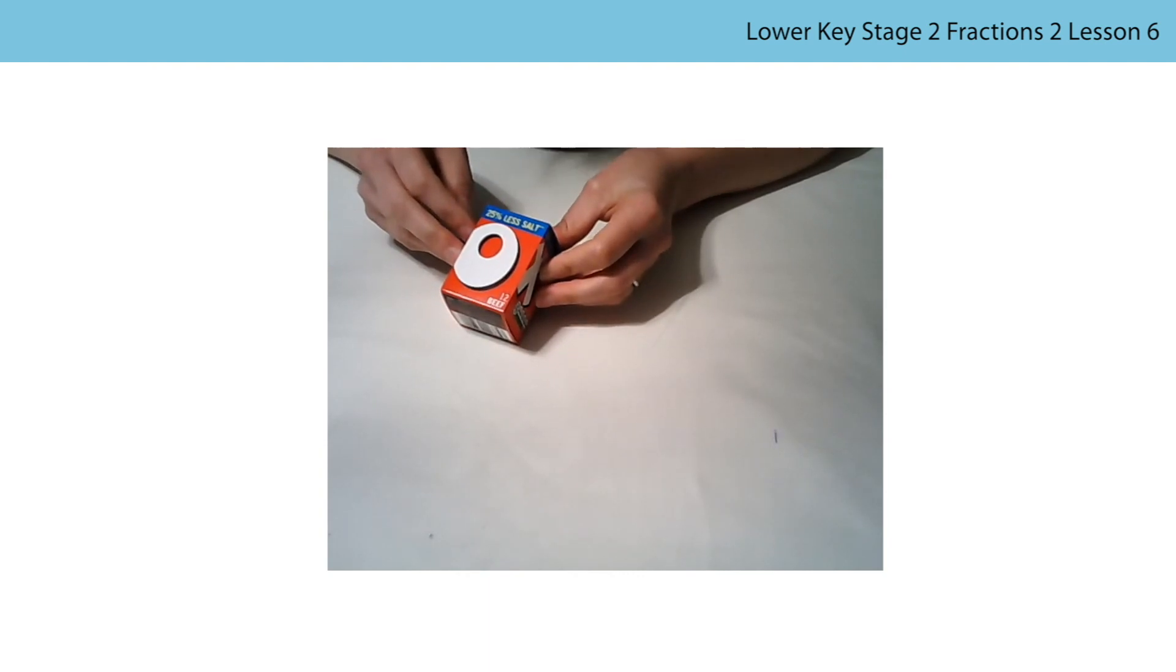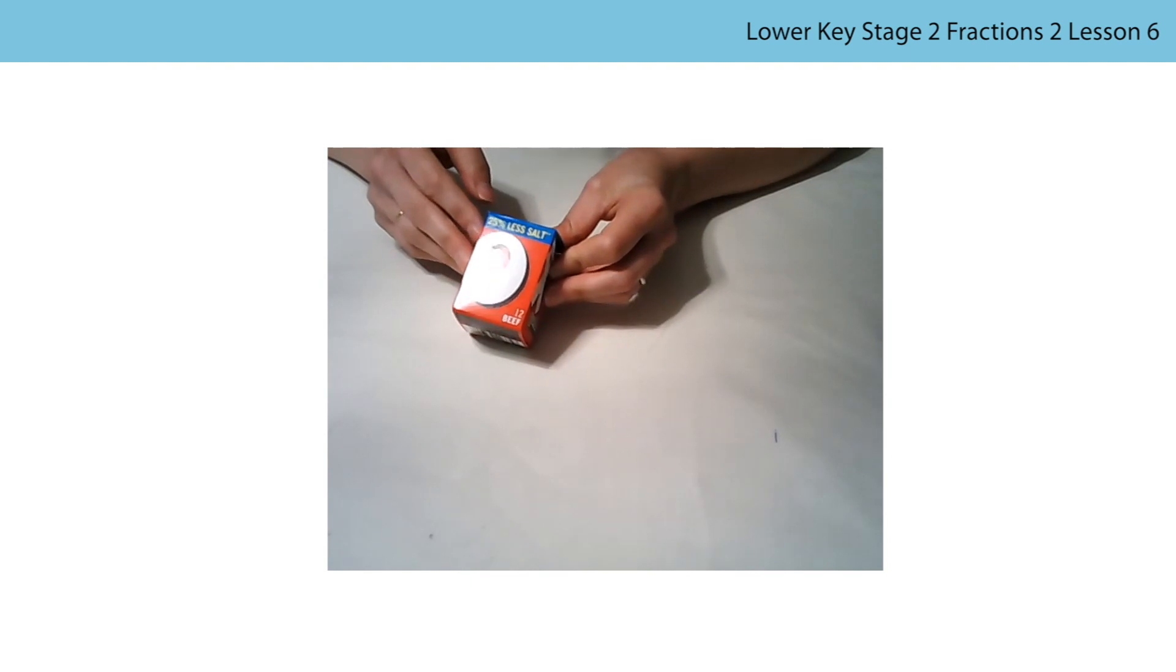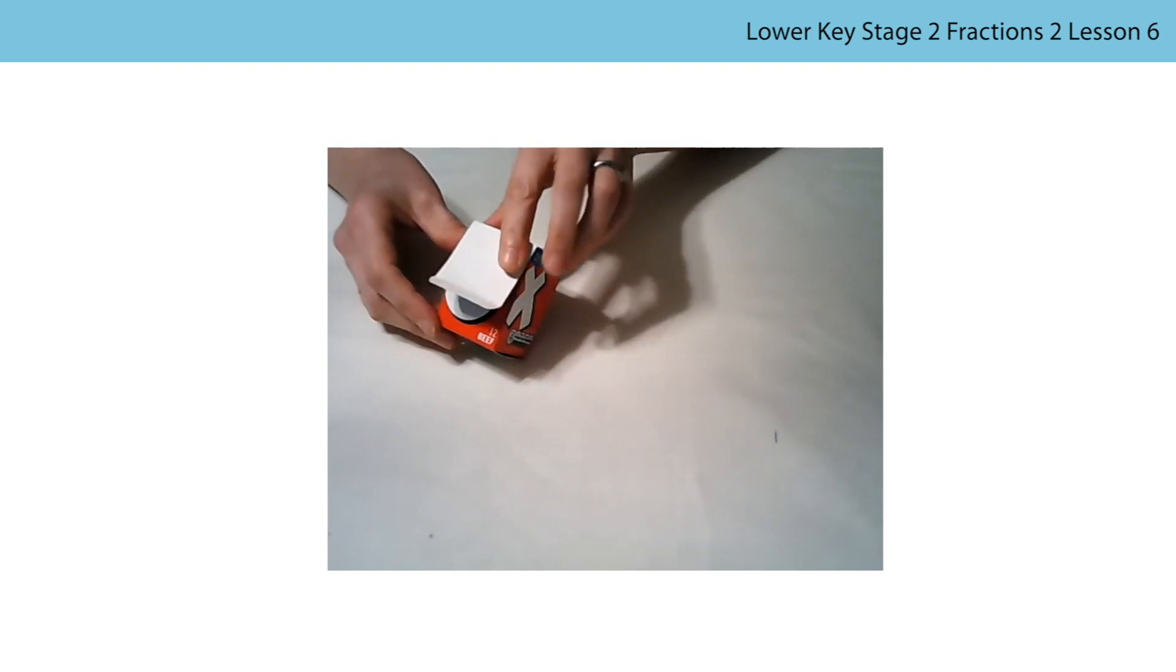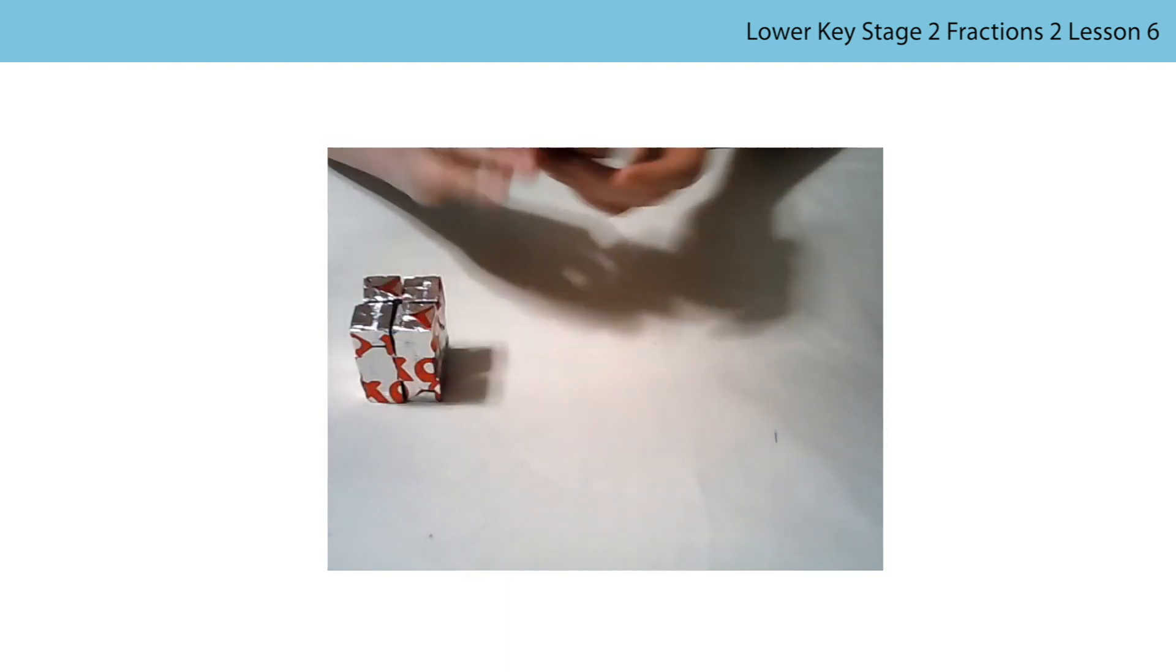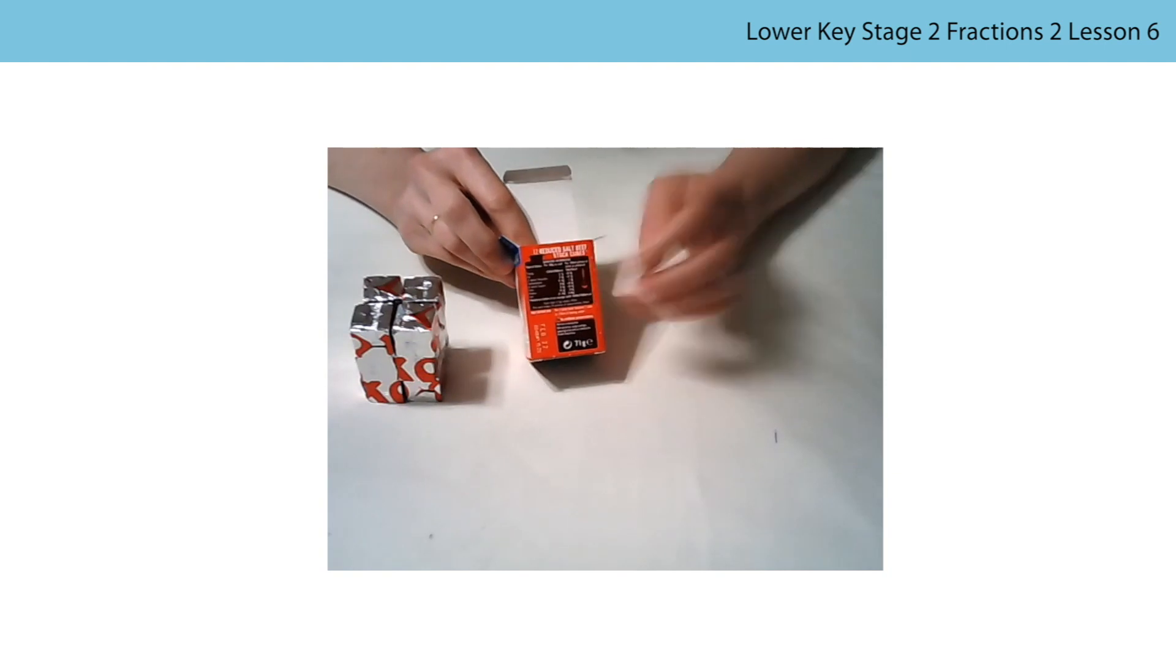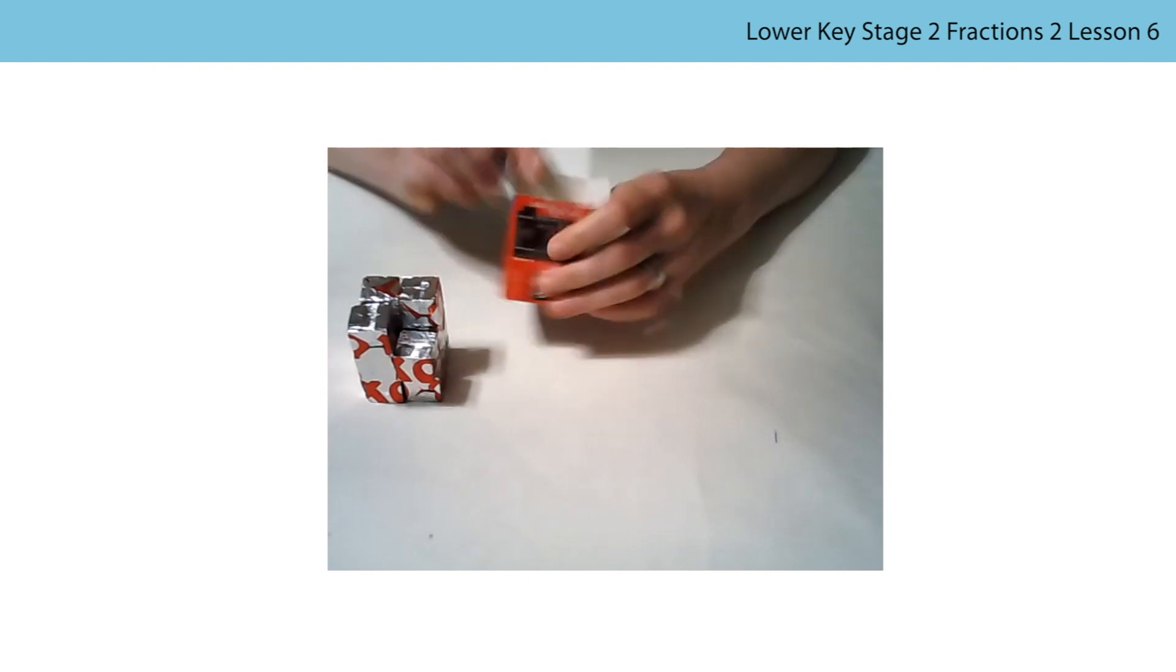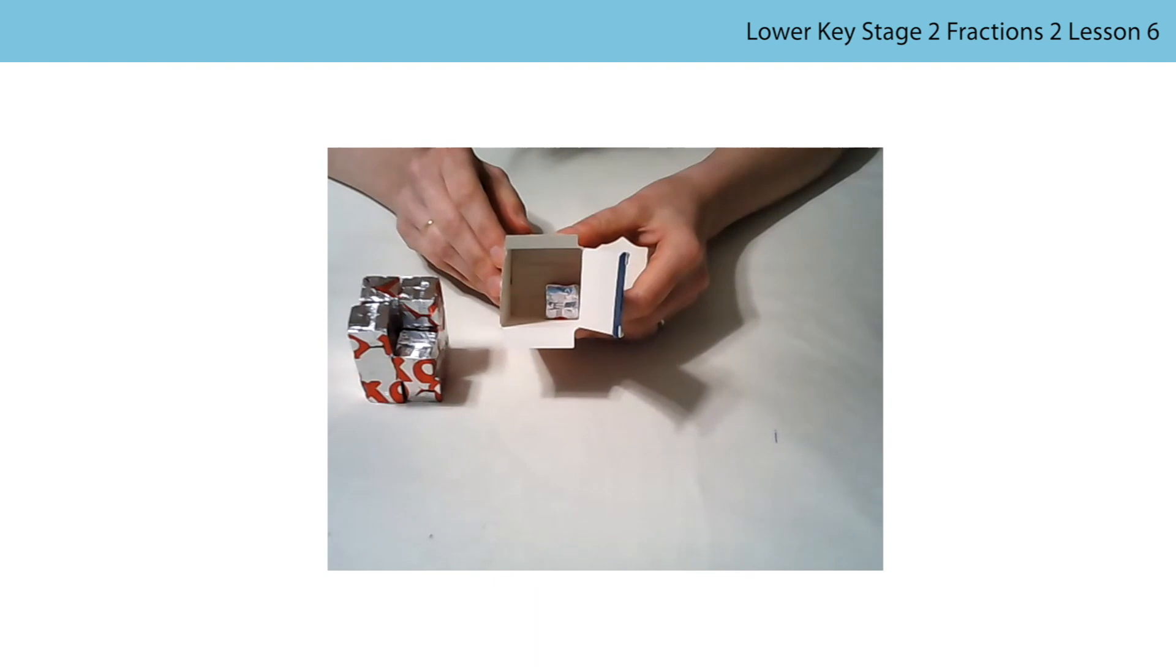Still thinking about three-dimensional models, I want to now think about the fraction of a whole space that is filled. Let me give you an example. You can see here that I have an OXO cube box. The full box holds twelve cubes, and so each cube represents one-twelfth of the whole box. If I empty the box and put one cube back in, then we could say that one-twelfth of the whole box is filled.